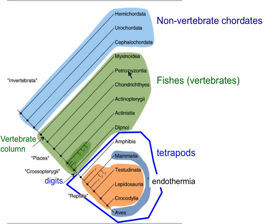On this end we have tetrapods — four-limbed vertebrates that colonized the terrestrial environment and live on land. We start with amphibians, and we also have mammals, birds, and reptiles shown here in orange.